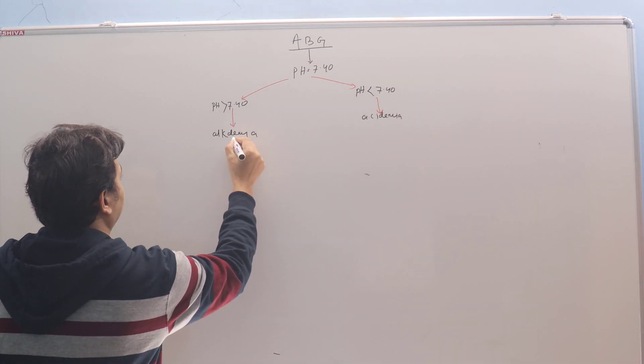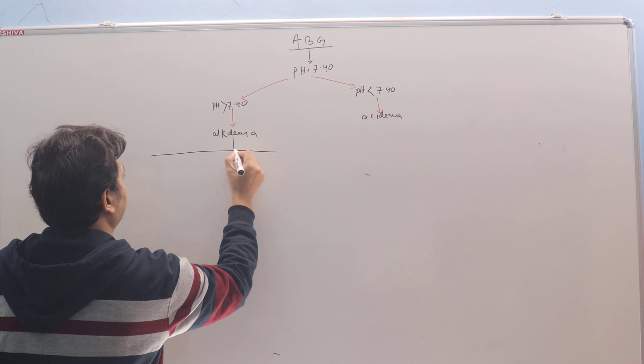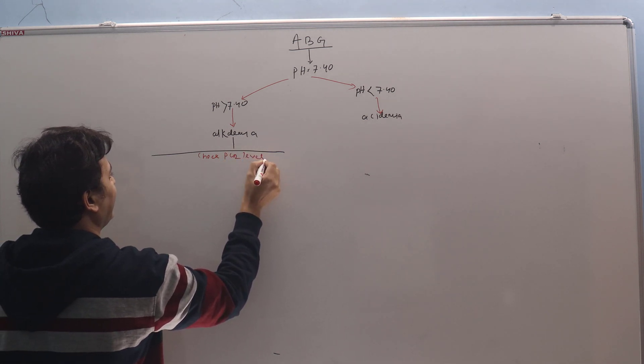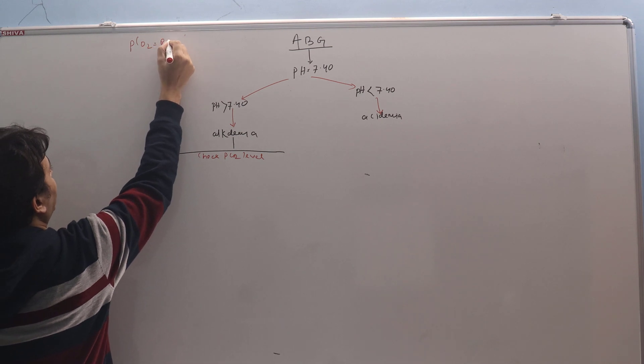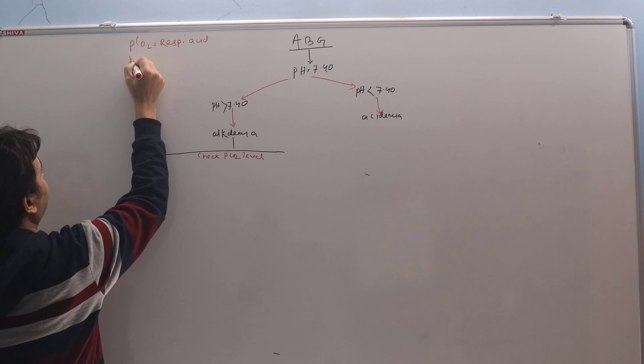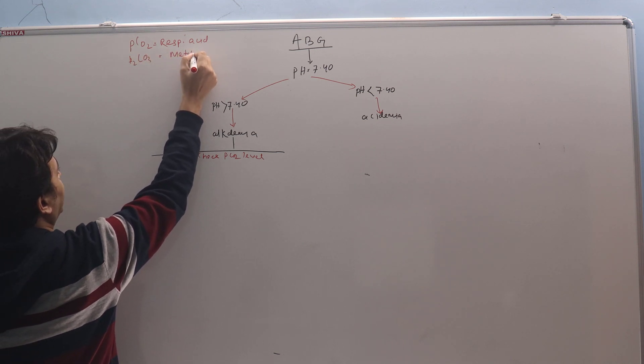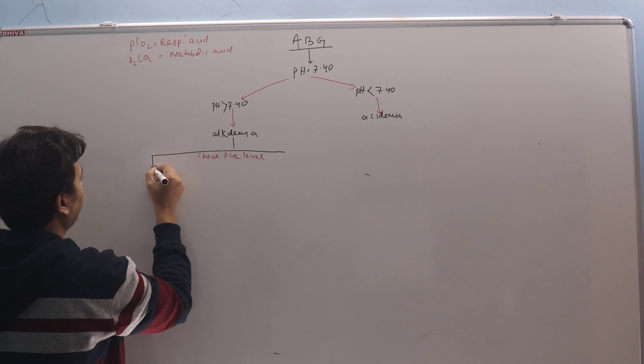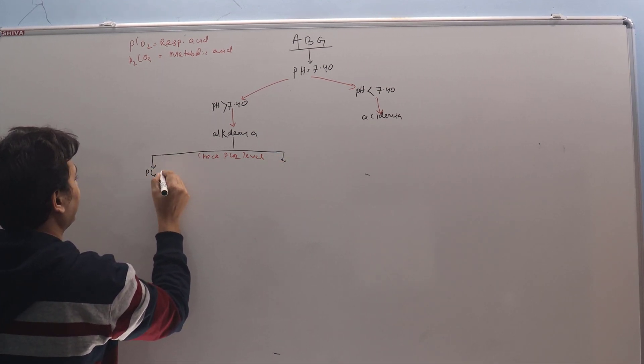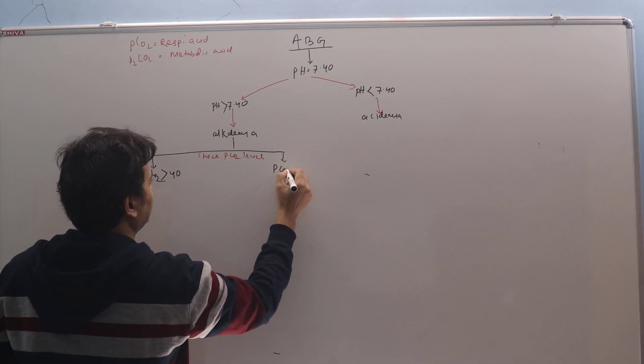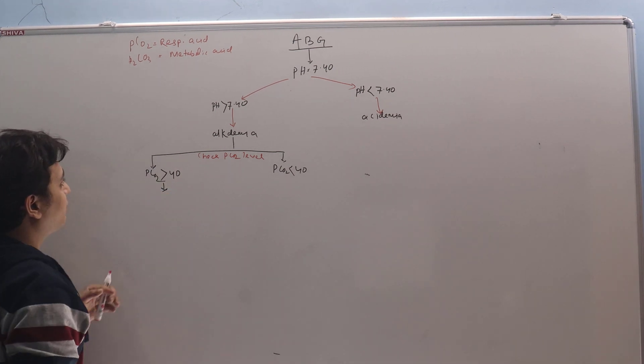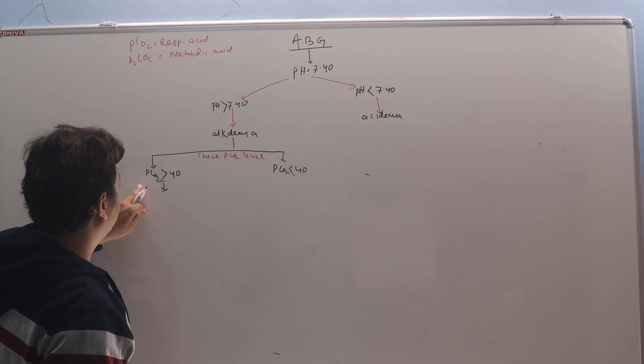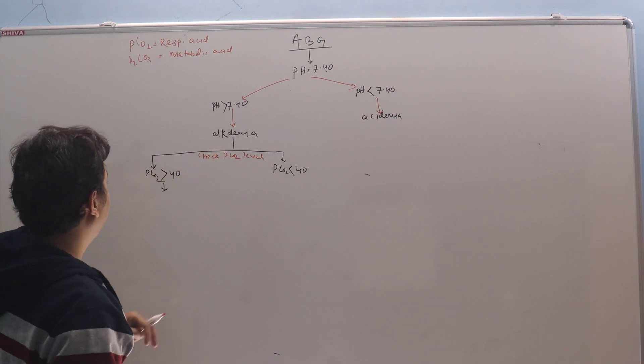Now the next step will be we'll look at the PCO2 level in the blood. So check PCO2. PCO2 can be called as the respiratory acid and carbonic acid is the metabolic acid. So there can be two probability here for PCO2: whether PCO2 is more than 40 or PCO2 is less than 40. When PCO2 is more than 40, so alkalosis at the same time PCO2 is more than 40, this cannot be respiratory alkalosis because respiratory acid content is more than 40. So this has to be metabolic alkalosis.